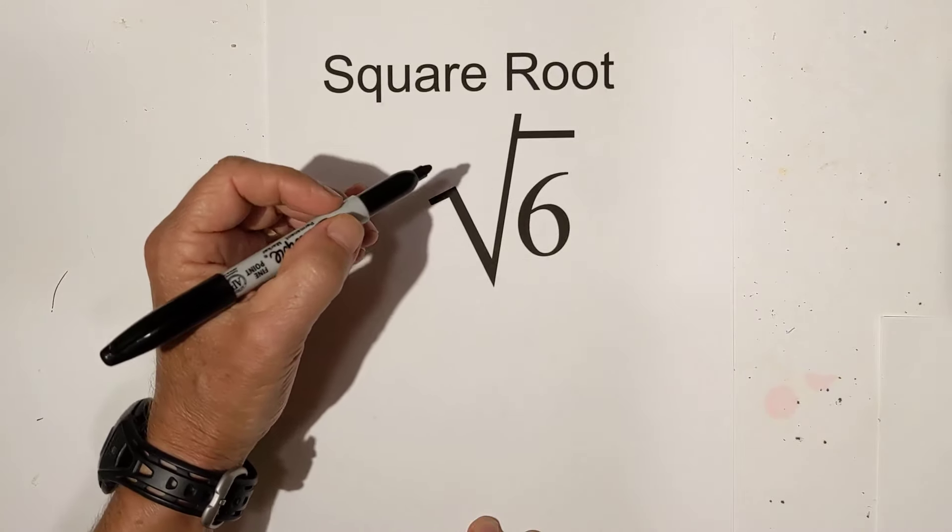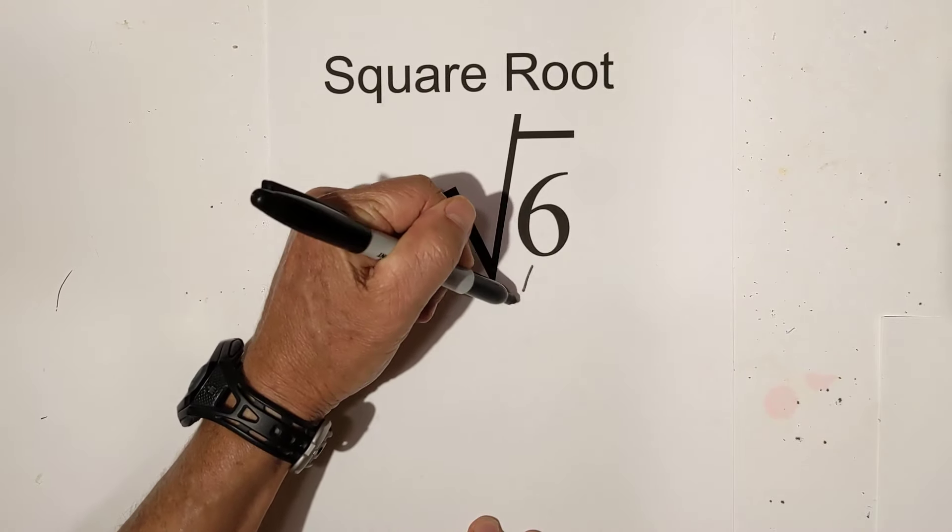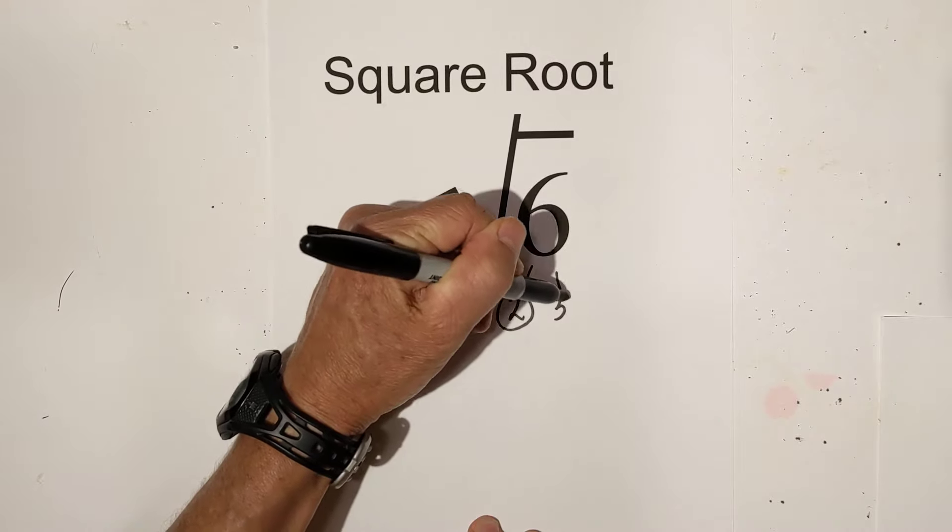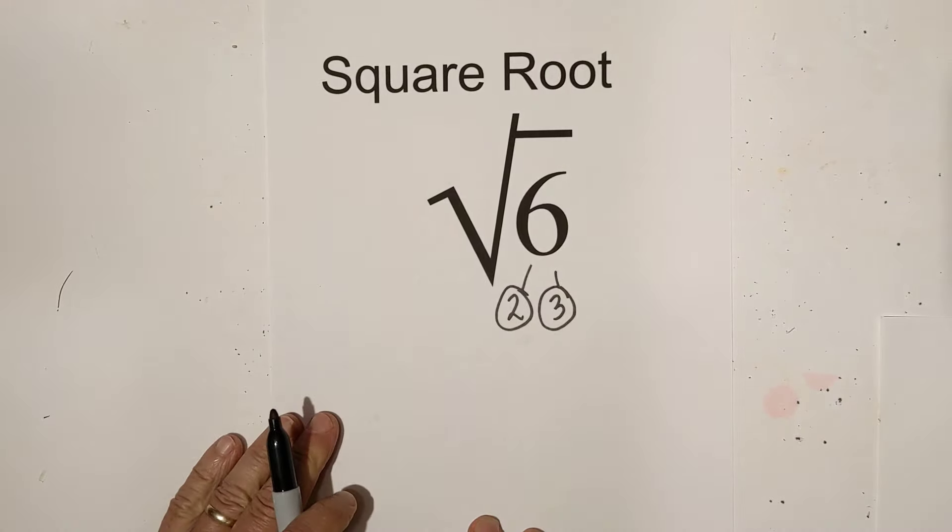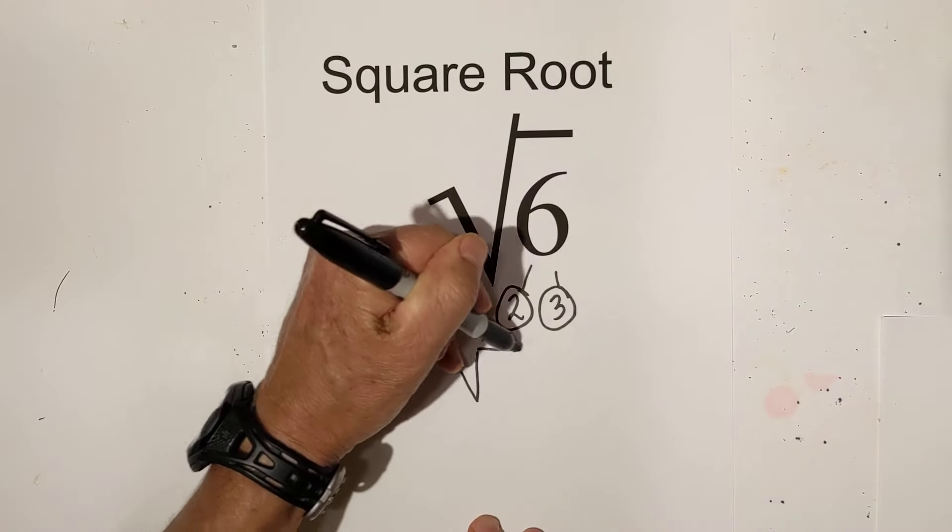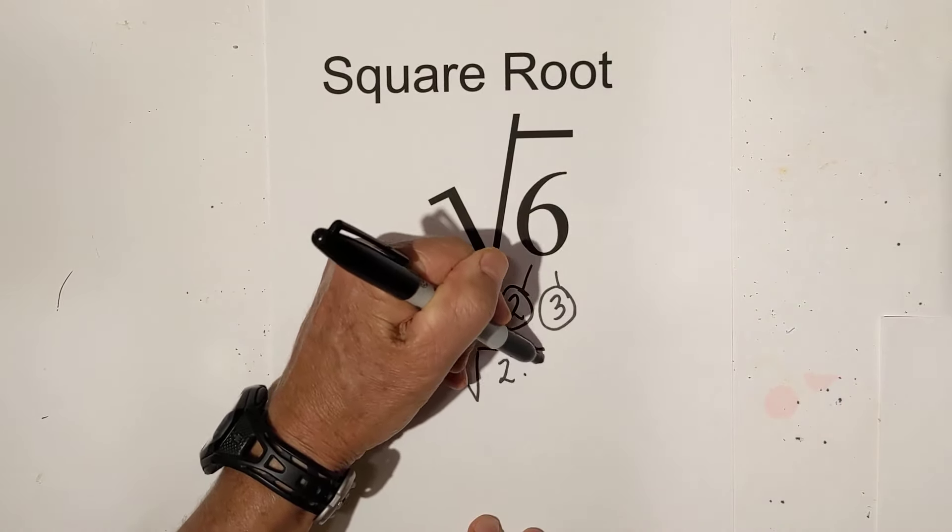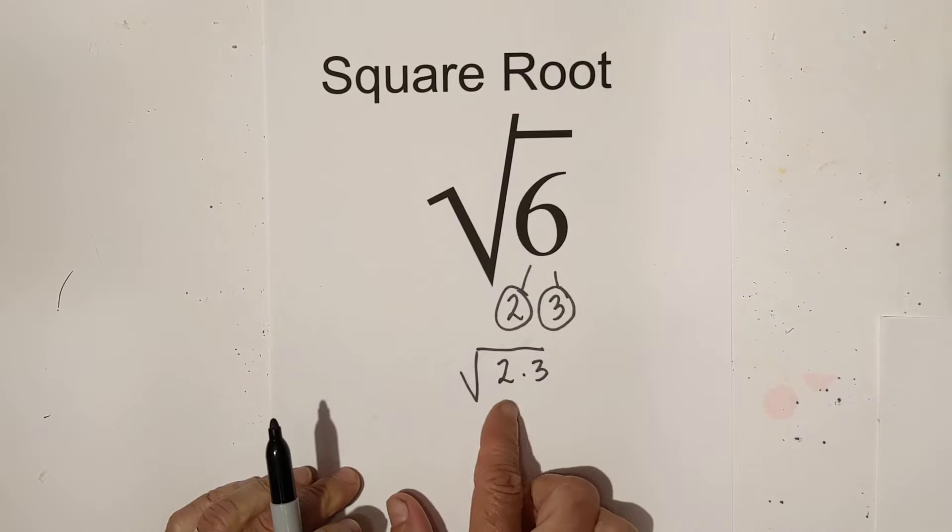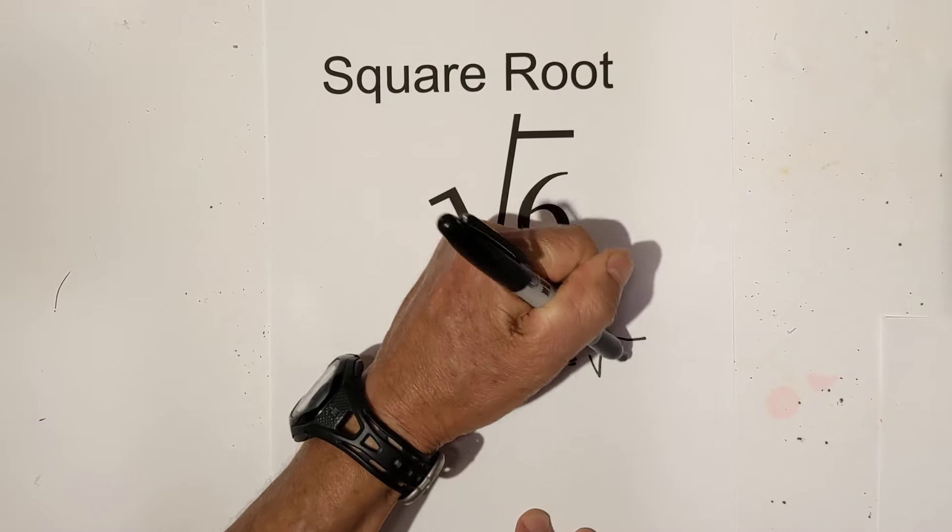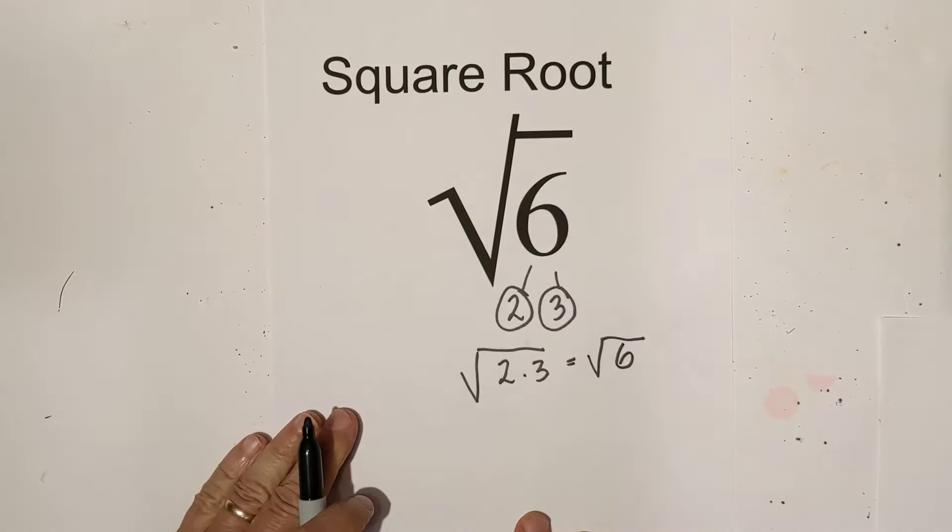First, let's simplify. I use a factor tree, so let's go 2 times 3. I'll circle these because they're both prime, so now we have down to only primes. If I place them under the square root sign, I have 2 times 3 and I do not have a pair of numbers to move out. So the square root of 6 simplified is simply the square root of 6.